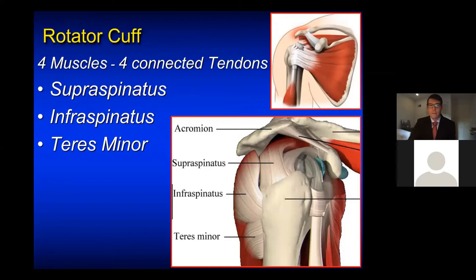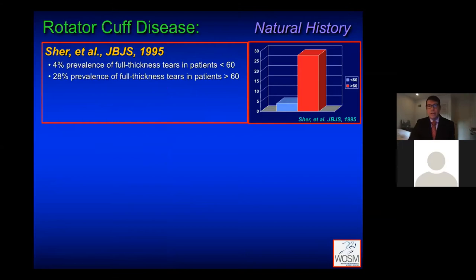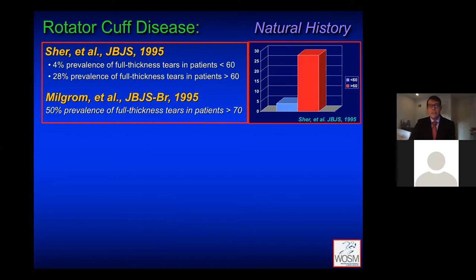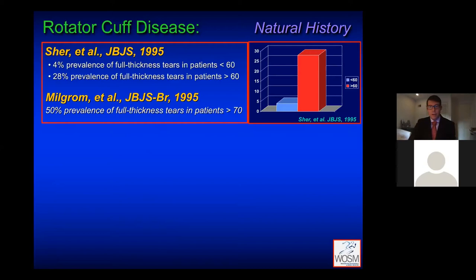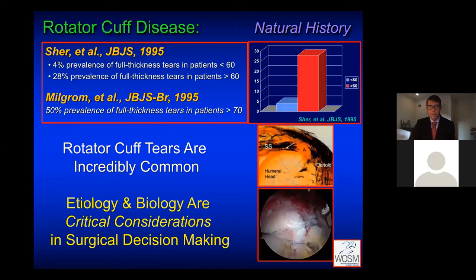One of the most important things to be educated on as a patient is the natural history of rotator cuff disease. At some point in our life, over 50% of us, if we live long enough, will have a rotator cuff tear. Under the age of 60, full thickness or complete disruptions of tendon attachment to bone are uncommon, as opposed to partial thickness tears, which are quite common in elite asymptomatic overhead athletes in their 20s and 30s. But as we get over age 70 to 80, over 50% of the population will have a tear. These are incredibly common and come in lots of different forms, making the etiology and the biology of each individual patient critical considerations whenever you're talking about possible surgery.